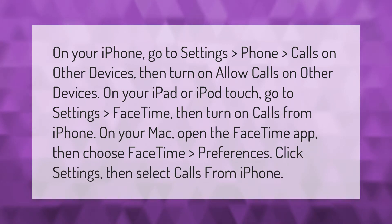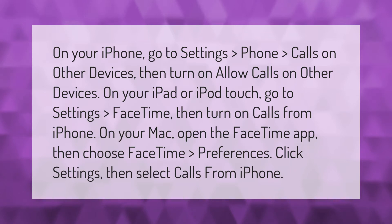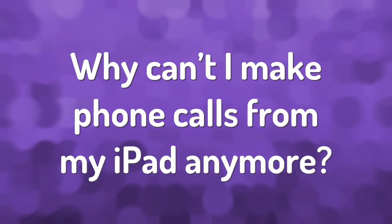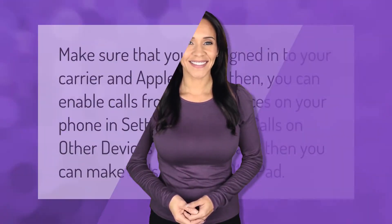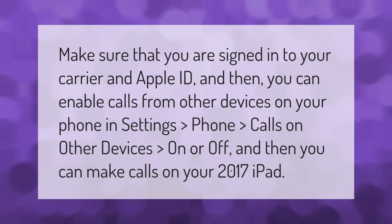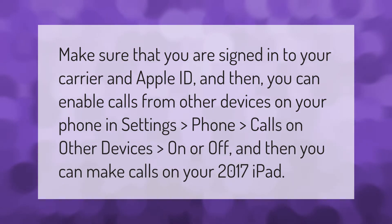On your Mac, open the FaceTime app, then choose FaceTime > Preferences, click Settings, then select 'Calls from iPhone.' Make sure that you are signed into your carrier and Apple ID, and then you can enable calls from other devices on your phone in Settings > Phone > Calls on Other Devices.